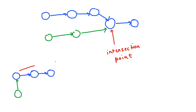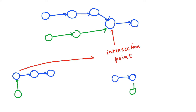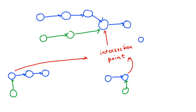The intersecting point can also be the last node of linked list one, or there can be a case where two linked lists are given but they never intersect.